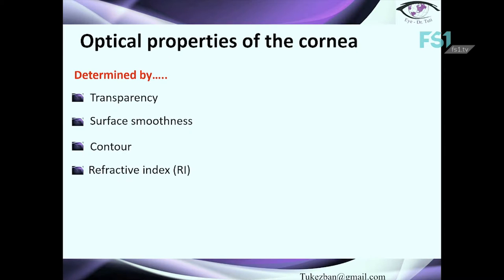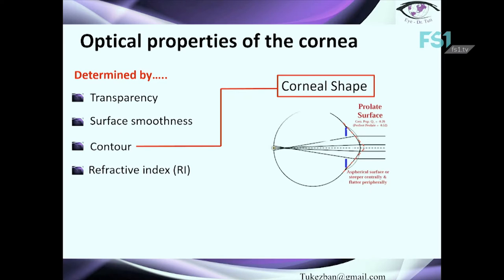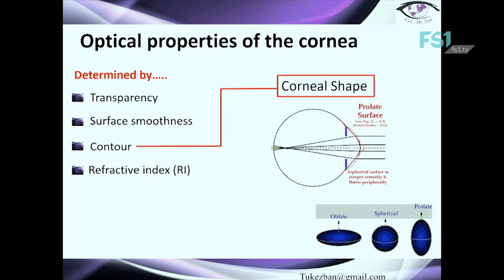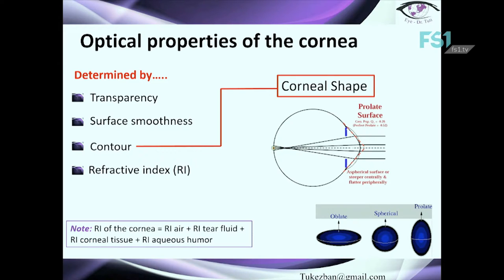The optical properties of the cornea are determined by transparency, surface smoothness, contour, and refractive index. Regarding contour — meaning corneal shape — it is important to know that the cornea is prolate. There are three basic shapes of the cornea: oblate, spherical, and prolate. When we talk about the refractive index, the refractive index of air, tear fluid, corneal tissue, and aqueous humor is approximately 1.3 — this is the refractive index of the cornea.